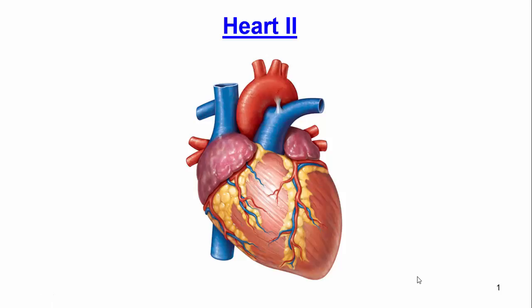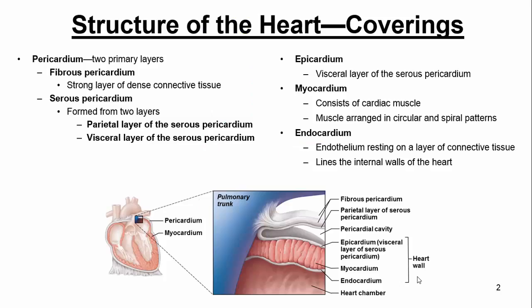In today's lecture, we're going to continue our conversation about the heart. The first thing I want to look at is the structure of the heart and talk about the coverings of the heart. A few different terms we want to look at here. Something called pericardium that you see up here on the top left, and this is basically composed of two primary layers.